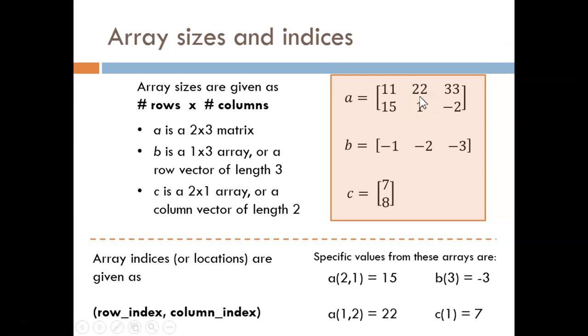With vectors, since they only have one dimension, you only need to provide one index. The third index in B holds a negative 3. Similarly, the first index in C holds a 7.